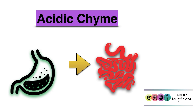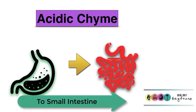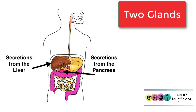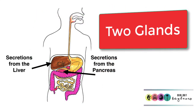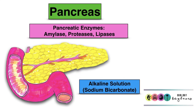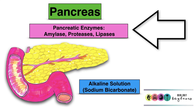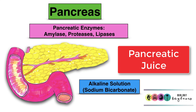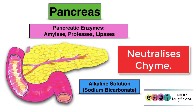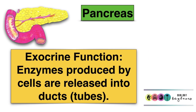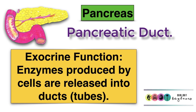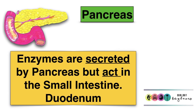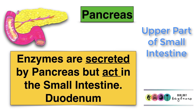Eventually the substance leaving the stomach and entering the small intestine is highly acidic and is known as chyme. The acidic chyme is then acted upon by secretions from two glands — the liver and the pancreas. The pancreas secretes many enzymes including pancreatic amylase that acts upon starch, pancreatic proteases which act on proteins, and pancreatic lipases which break down lipids. These are part of the pancreatic juice, which also contains sodium bicarbonate, important for neutralising the acidic chyme. Because the pancreas secretes these enzymes into the pancreatic duct, this is an example of the exocrine function of the gland. Note that these enzymes act in the duodenum, the upper part of the small intestine.